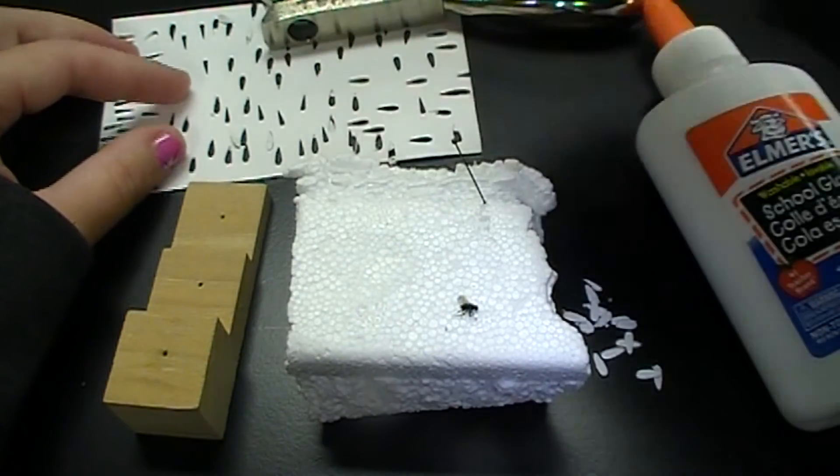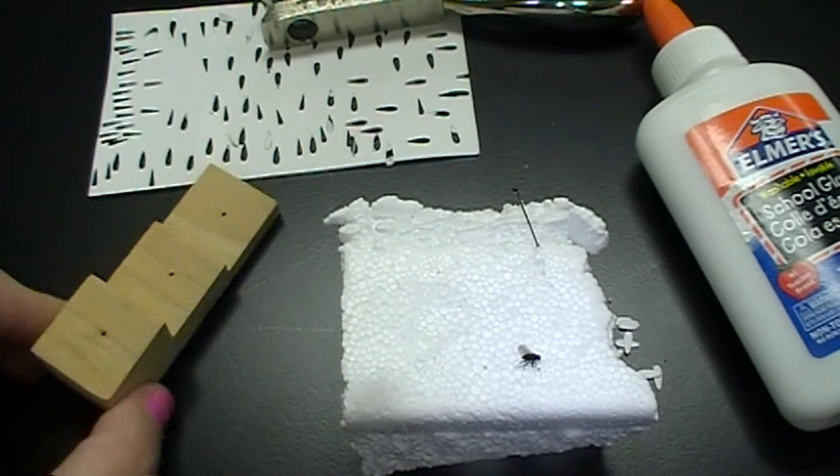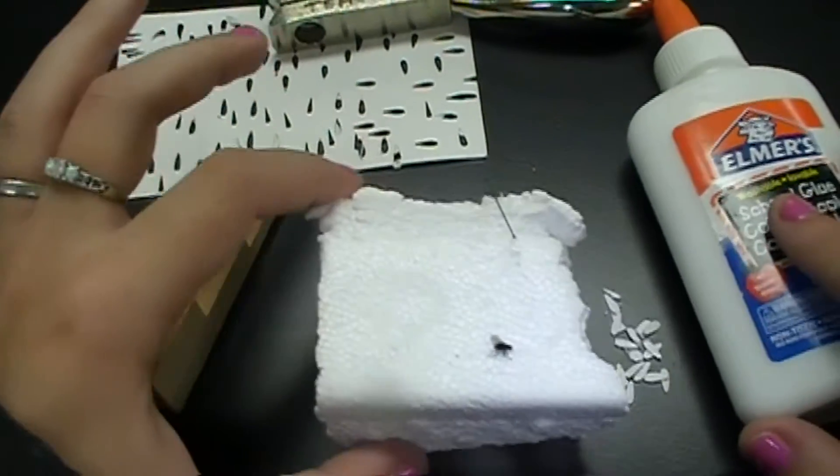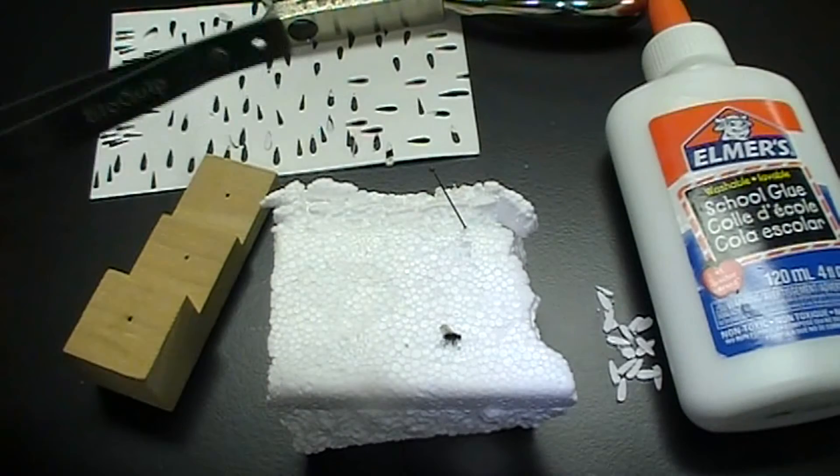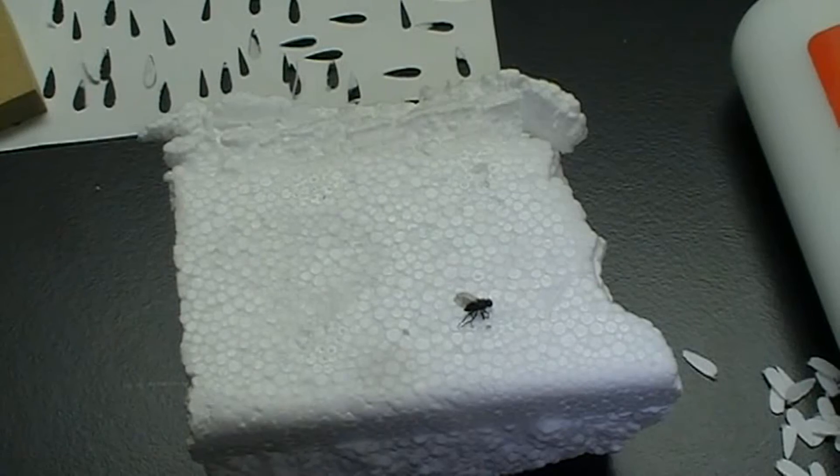You're going to need your pinning block and some glue. You can either use Elmer's glue or nail polish. We'll talk at the end about which one you might want to use and why.